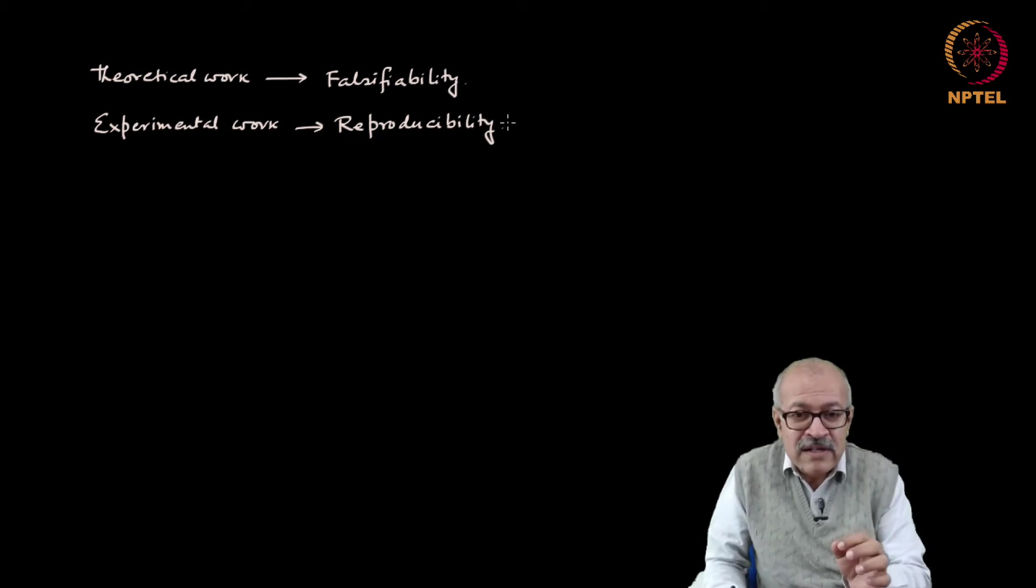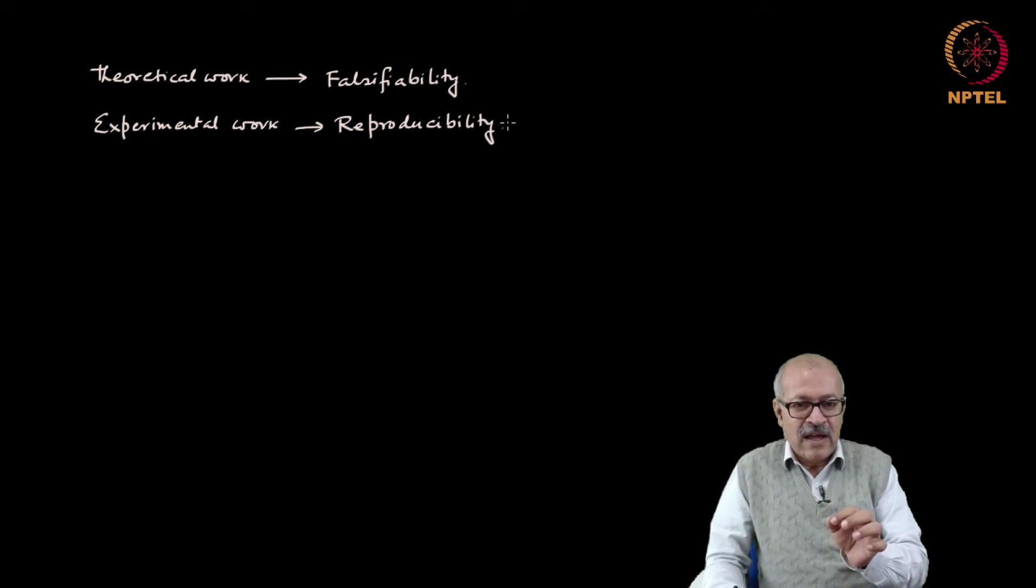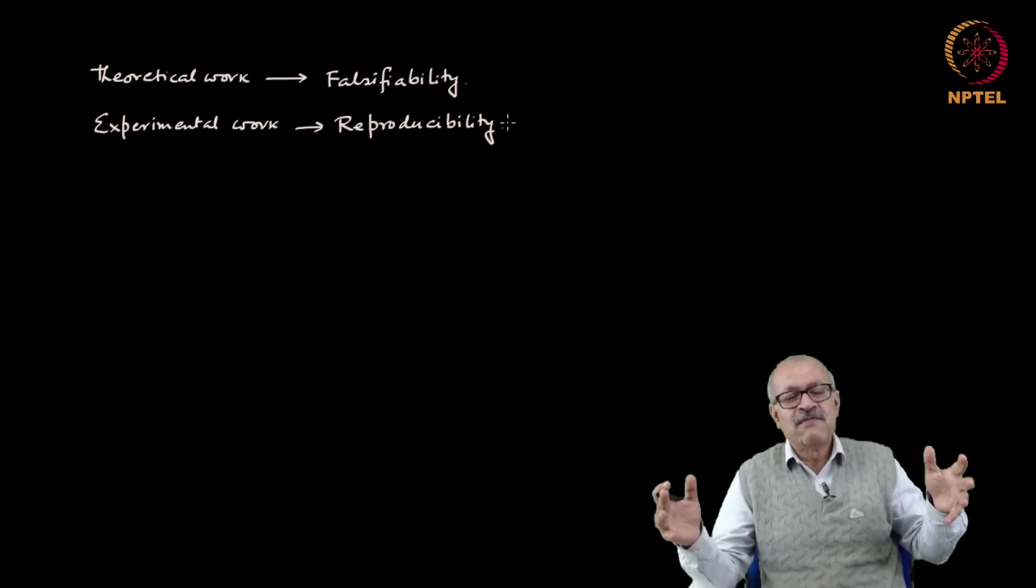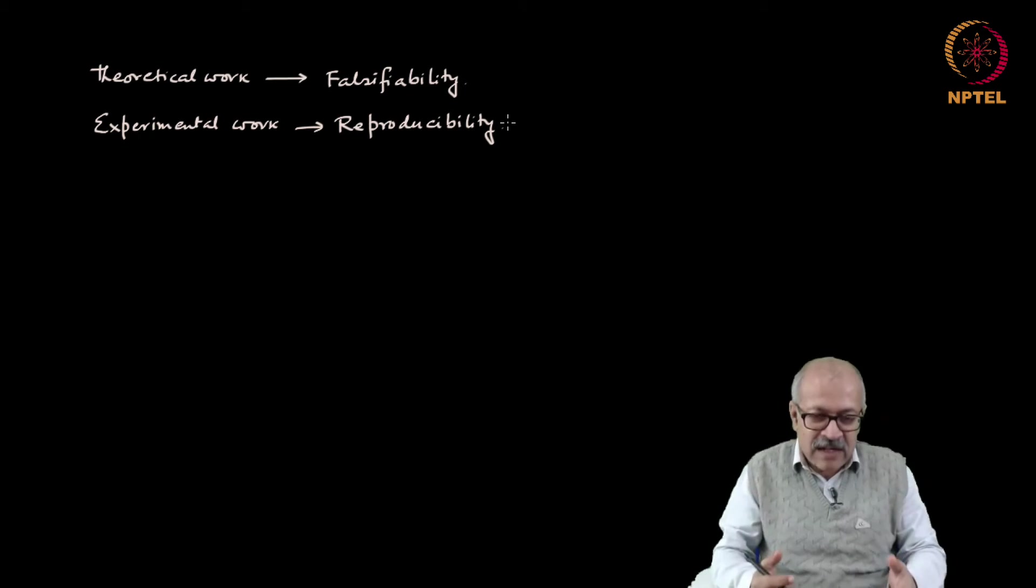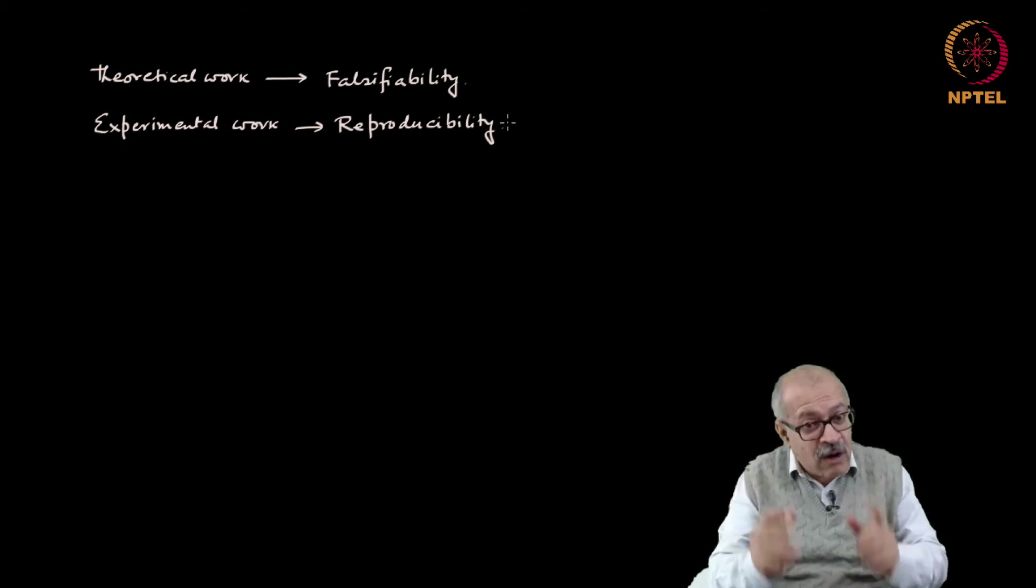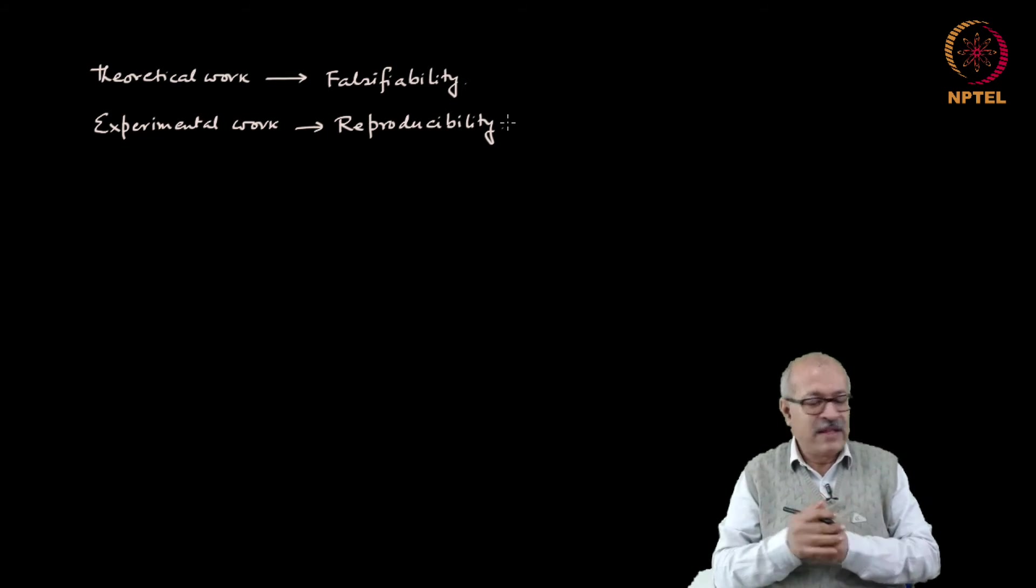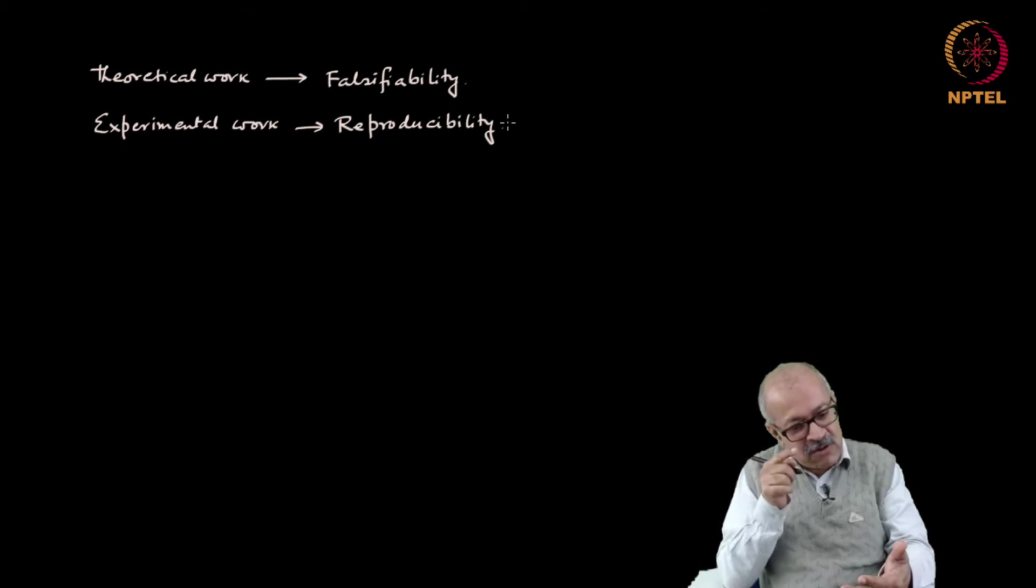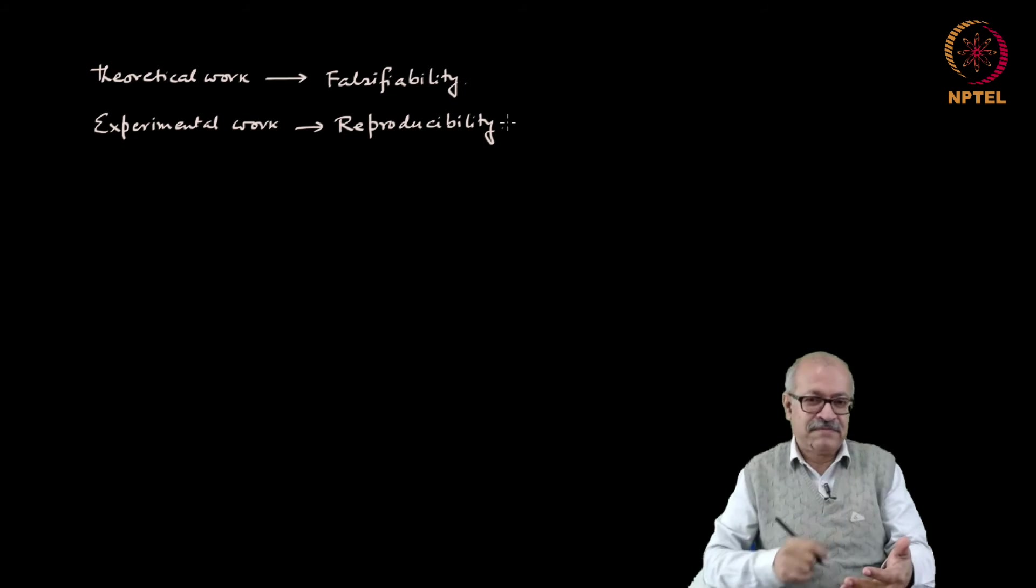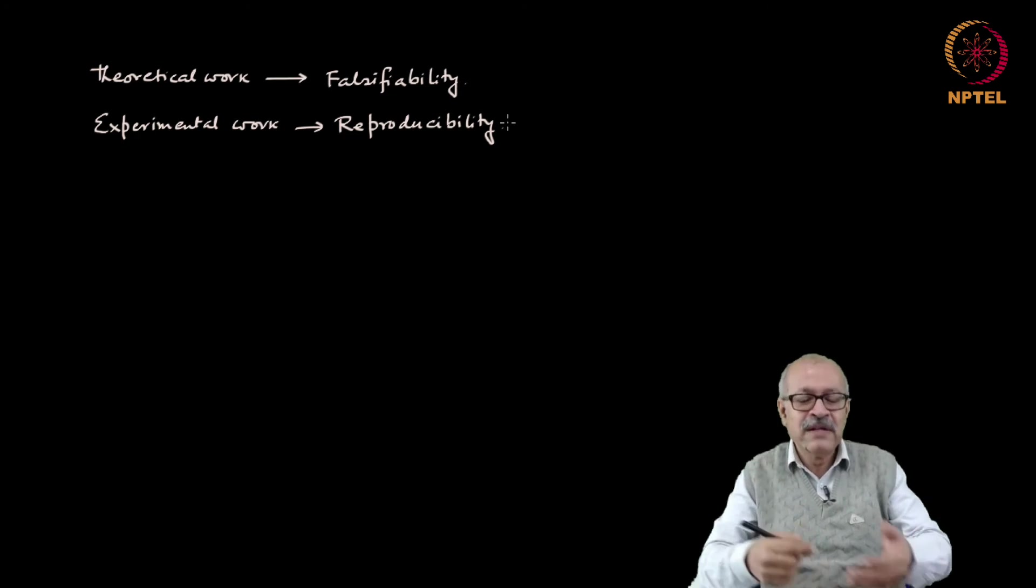So reproducibility is very important, and science, as I said, bases itself on doubt. You have done an experiment and you have published the result, immediately people will doubt it, will not believe it, and that is how science works. Whenever you see a paper, then also you have to read it and then doubt everything of it and check. How do you check?